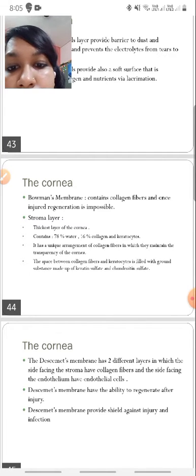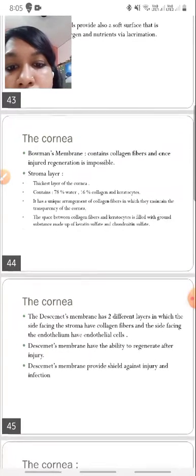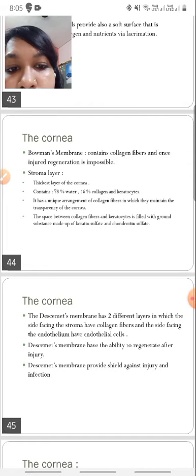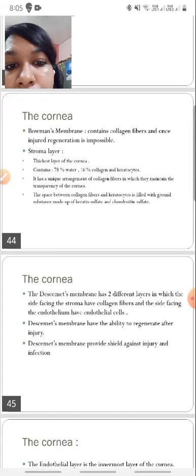Next is Bowman's membrane, which contains collagen fibers and regeneration is not possible in this layer. The thickest layer of the cornea is the stromal layer. It contains 78% water and 60% collagen fibers. There is a particular uniform lattice arrangement of the collagen fibers which help maintaining the transparent nature of the cornea.